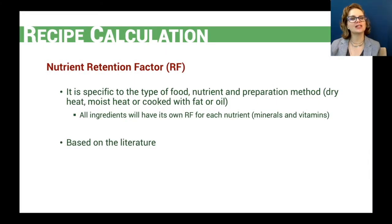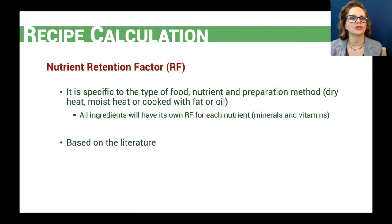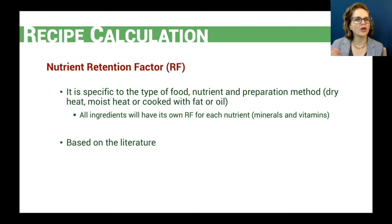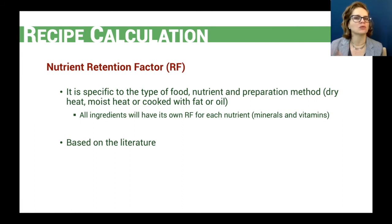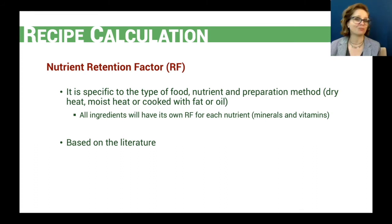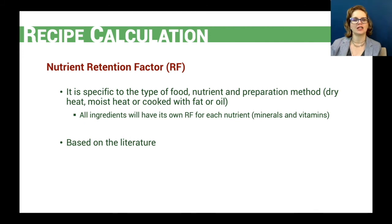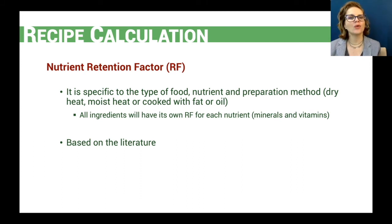Nutrient retention factors are specific to the type of food, the nutrient, and the preparation method. Some procedures result in higher losses — for example, when we boil a food and then drain the water, we lose much more minerals than if we boil and use the water in our recipe. Preparation methods are broadly divided into three groups: dry heat, moist heat, and cooked with fat or oil. Each ingredient will have its own retention factor for each nutrient, including vitamins and minerals.